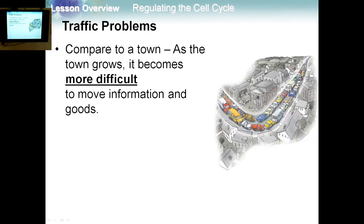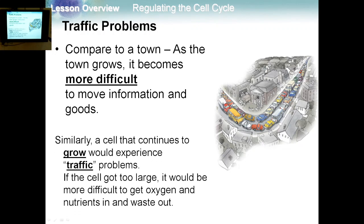Let's compare this to the town. As the town grows, it becomes more difficult to move information and goods. It's really difficult to transport goods once the town is big, and the same thing happens inside the cell. A cell that continues to grow would experience a traffic problem. If the cell got too large, it would be more difficult to get oxygen and nutrients in, and to get waste out. It's really hard to transport information, nutrients, and waste if there is too much cell growth.